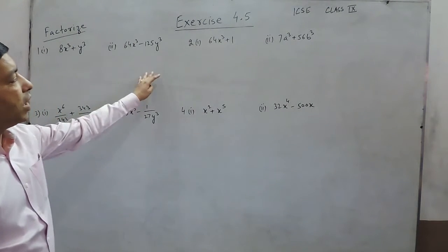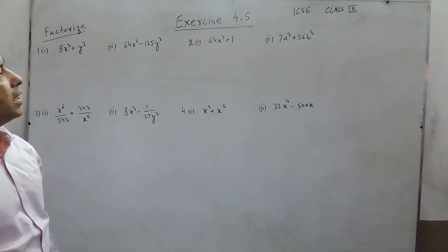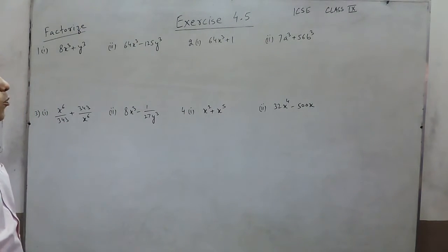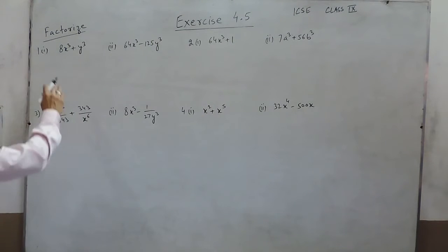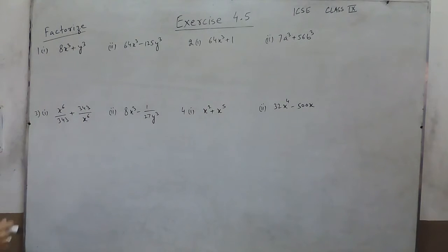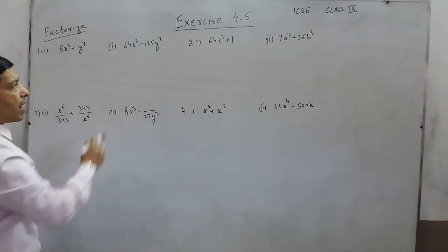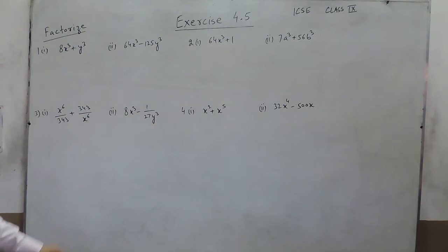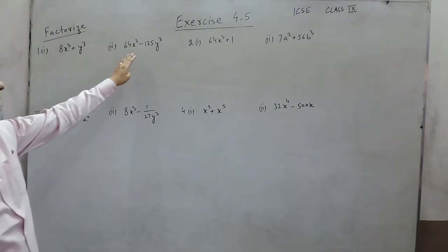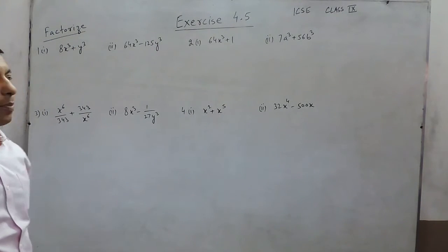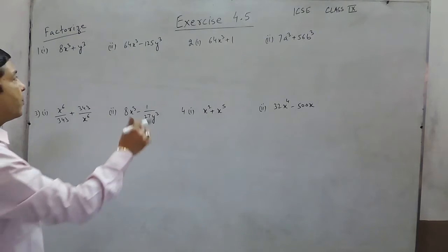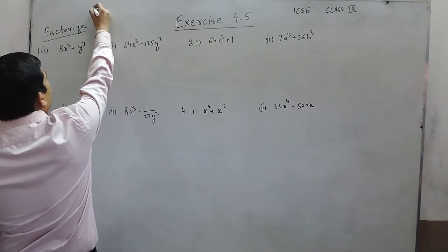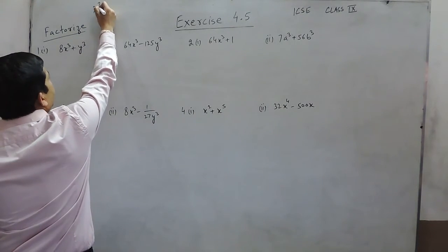Hello everyone, today we are solving exercise 4.5. The first question is we have to factorize 8x³ plus y³. The second part is we have to factorize with a negative sign in between. So we have to understand two identities first of all.